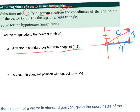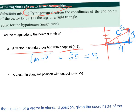Using the formula: take the x-coordinate of 4 and square it, which is 16; take the y-coordinate of 3 and square it, which is 9. Add the two quantities together and square root the result. 16 plus 9 is 25, and the square root of 25 is 5. So the magnitude of this vector — meaning the length — is 5 units.